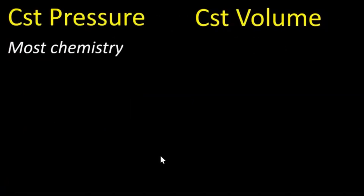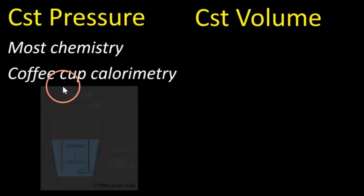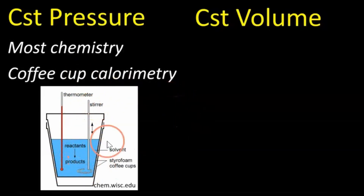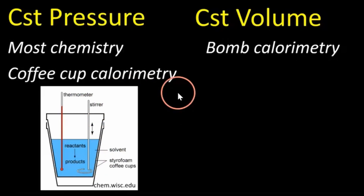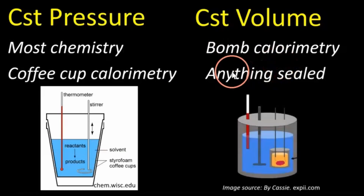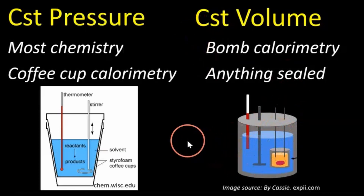To compare the two: constant pressure versus constant volume. Constant pressure is used in most chemistry, including coffee cup calorimetry, where you mix or react things open to the atmosphere and measure the temperature change. Under constant volume, this is what we do in bomb calorimetry — anything sealed in which the volume can't expand.